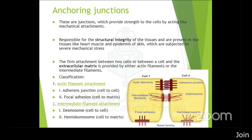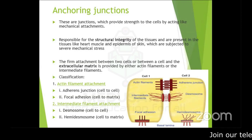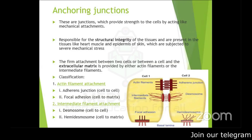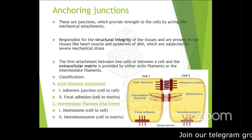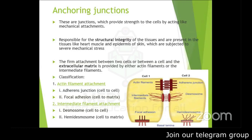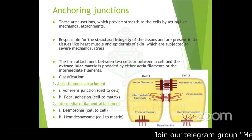Now the third type of junction: anchoring junctions. These are junctions that provide strength to cells by acting as mechanical attachments, giving mechanical stability to tissues. Anchoring junctions are responsible for structural integrity of tissue and are most commonly present in tissues subjected to severe mechanical stress, such as the heart muscle and epidermis of the skin.